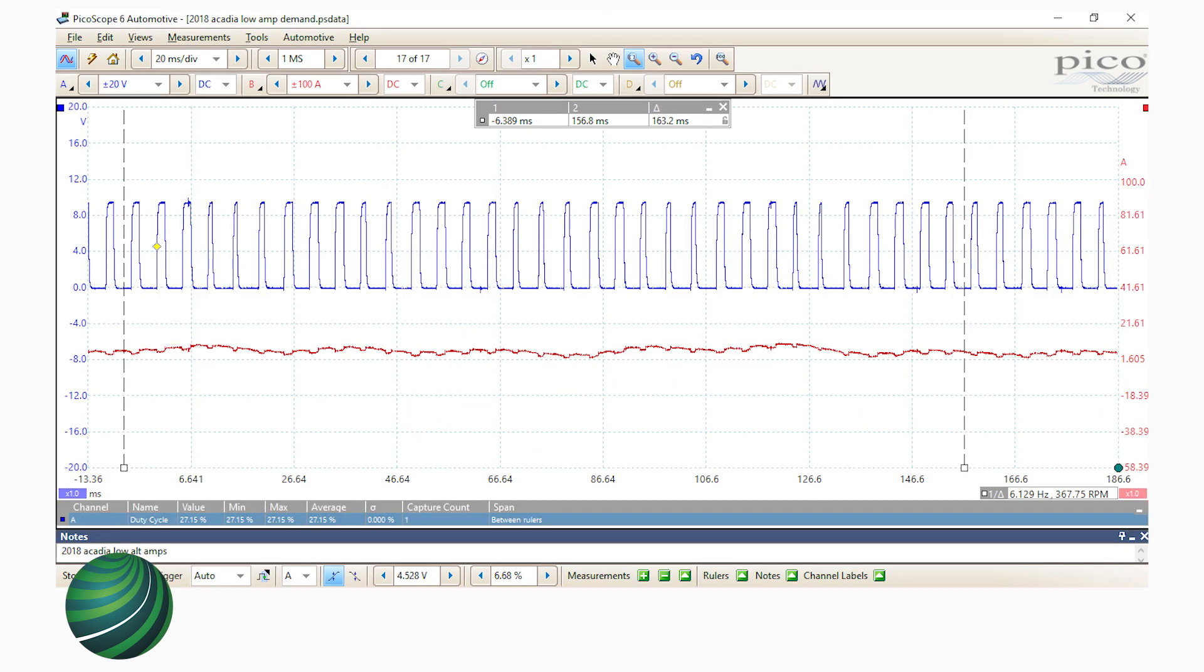The pattern shown is for a low load on the charging system. The duty cycle is low here, about 30% indicated by the wave pattern. The red current trace indicates the amperage output of the alternator, about 8 amps average.